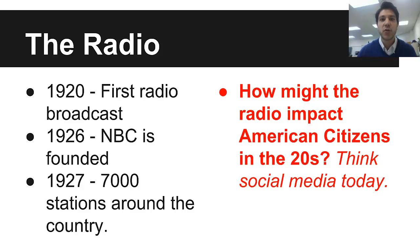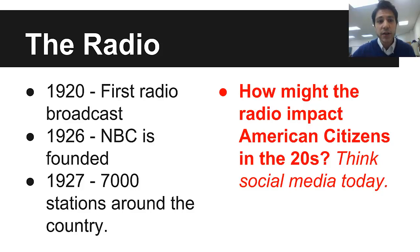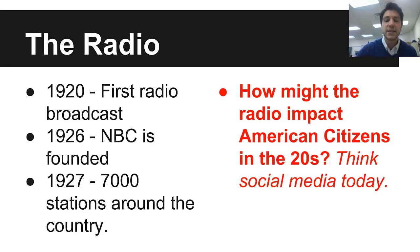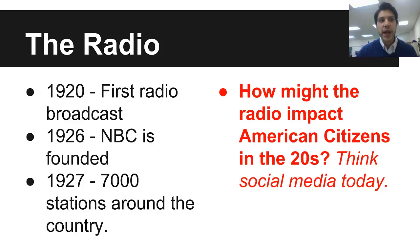1920 saw the first radio broadcast. In 1926, NBC — the National Broadcasting Corporation — was founded, and just one year later in 1927, 7,000 radio stations were operating around the country. Think about how the radio might impact American citizens in the 1920s, and consider the parallel to social media today. What does the radio do for the farmer? What does it do for the city dweller? How do we know about things now?